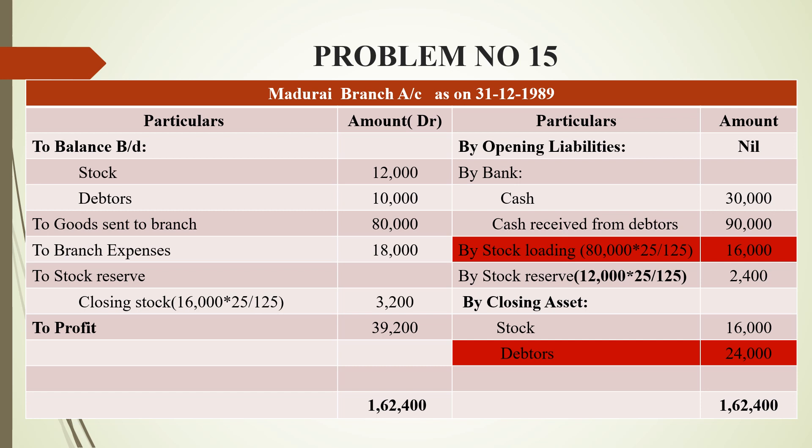By stock loading — goods sent to branch is 80,000, so 80,000 multiplied by 25 divided by 125 equals 16,000. By stock reserve on opening stock: 12,000 multiplied by 25 divided by 125 equals 2,400. Closing assets are closing stock 16,000 and closing debtors 24,000. The balancing figure on the debit side gives a profit of 39,200, which is not the book answer. The grand total on both sides is 1,62,400.